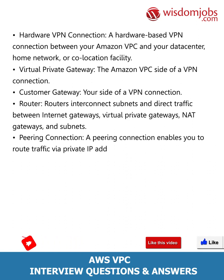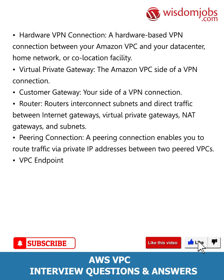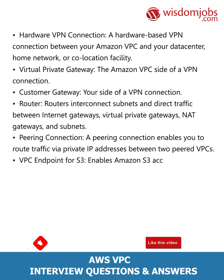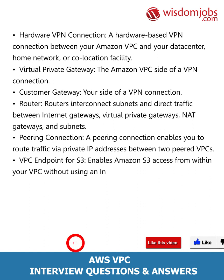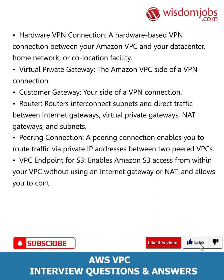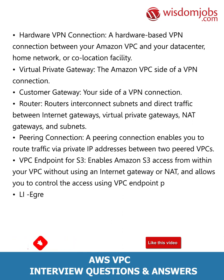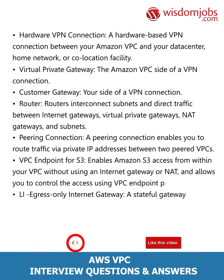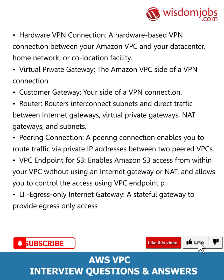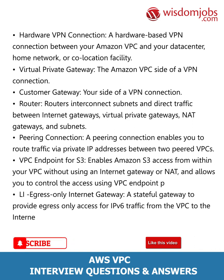A peering connection enables you to route traffic via private IP addresses between two paired VPCs. A VPC endpoint for S3 enables Amazon S3 access from within your VPC without using an internet gateway or NAT, and allows you to control the access using VPC endpoint policies. An egress-only internet gateway is a stateful gateway to provide egress-only access for IPv6 traffic from the VPC to the internet.